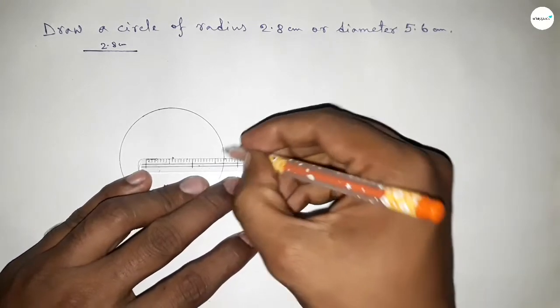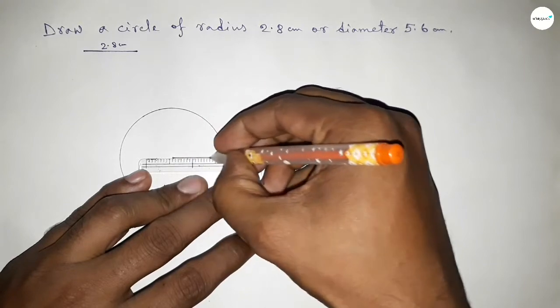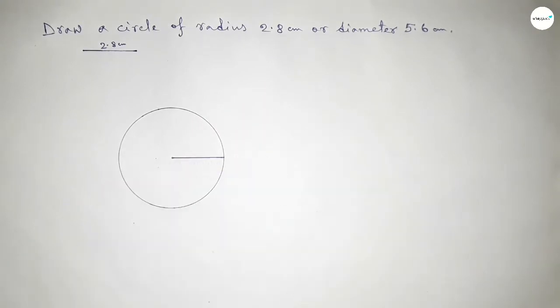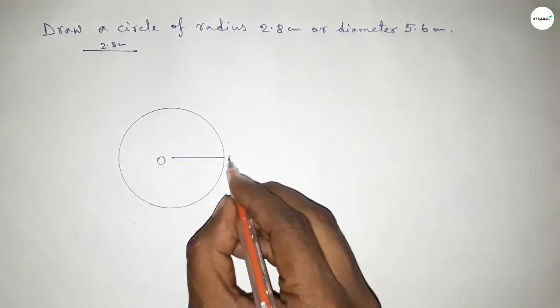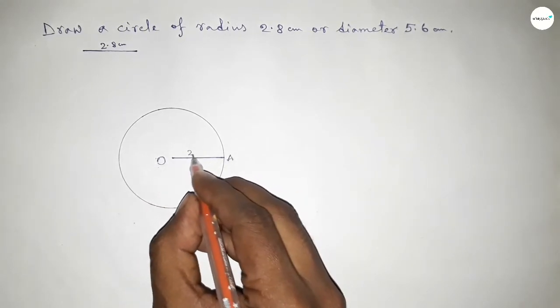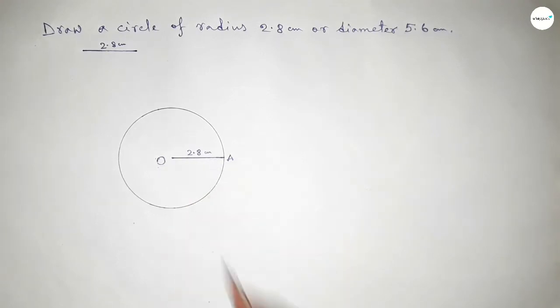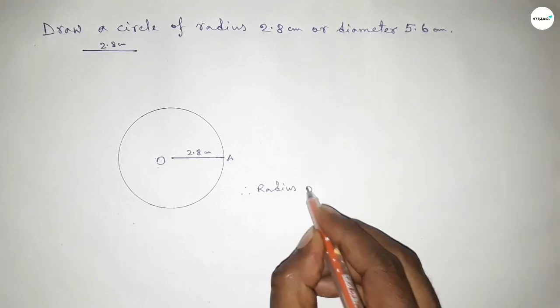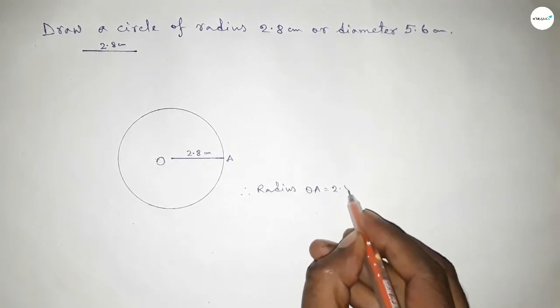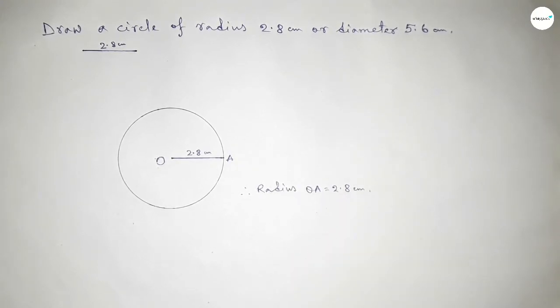So now joining this and taking here the center O and here a point A, so OA equals 2.8 centimeters. Therefore, radius OA equals 2.8 centimeters. That's all, thanks for watching.